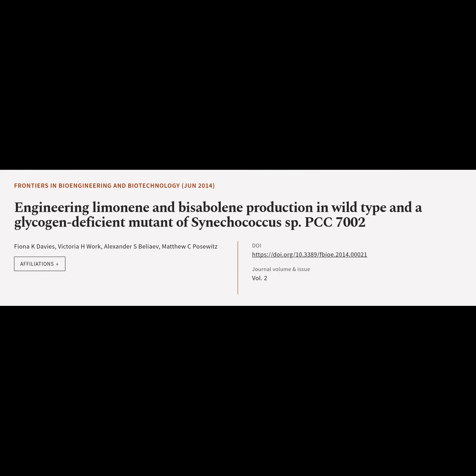This article is titled "Engineering Limonene and Bisabolene Production in Wild Type and a Glycogen Deficient Mutant of Sinococcus SP. PCC 7002" and was authored by Fiona K. Davies, Victoria H. Work, Alexander S. Beliaev, and Matthew C. Posewitz.